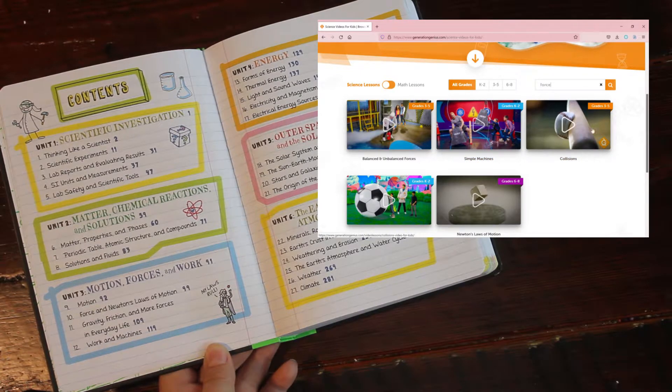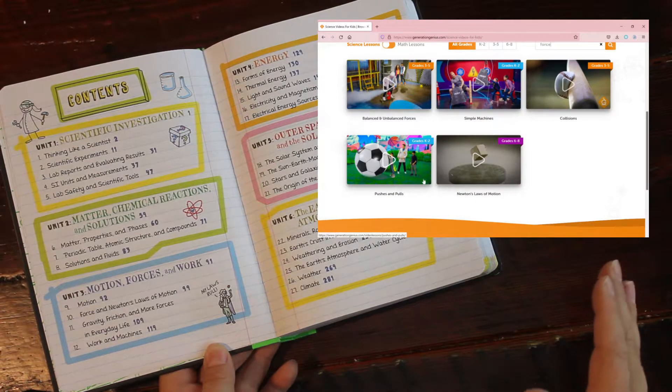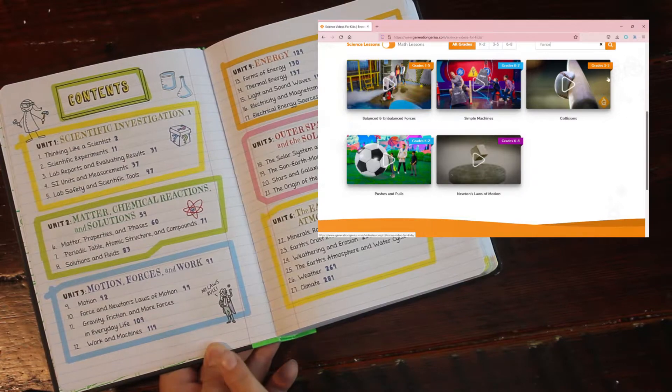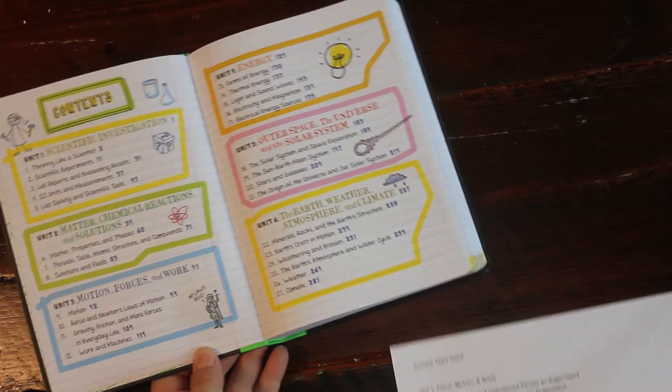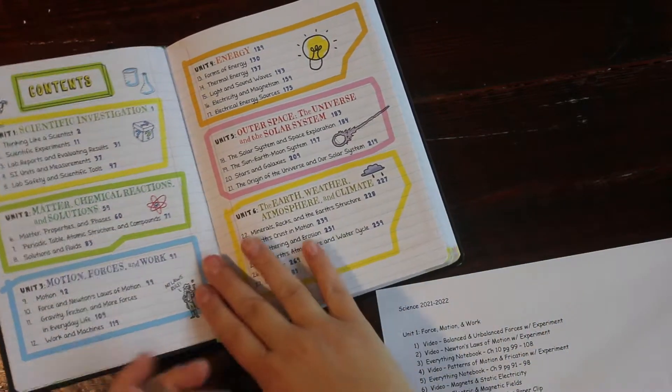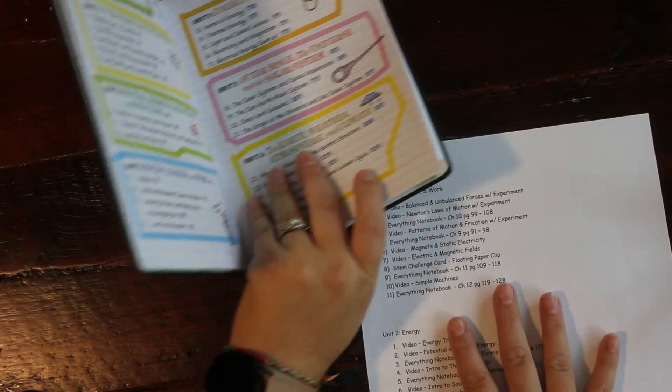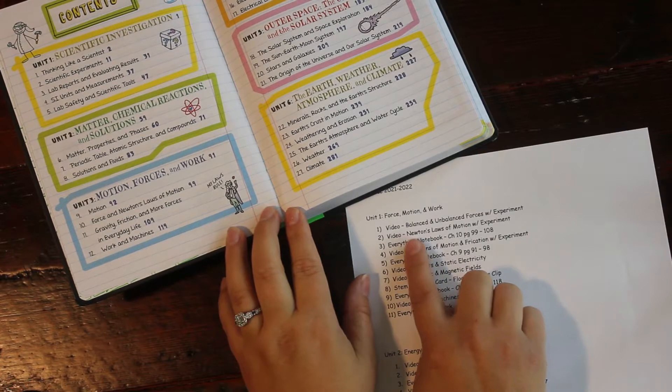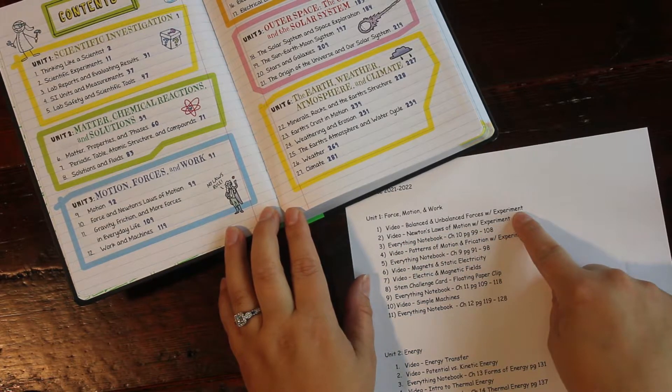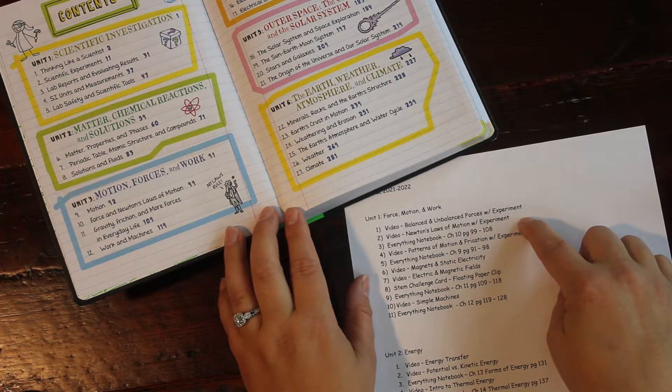Videos that coincide with what the chapters are in this book. And so here's kind of a general idea. So this was the forces in motion unit that I did. And so here, the first video we watched was balanced and unbalanced forces. Then we watched a video on Newton's laws of motion.